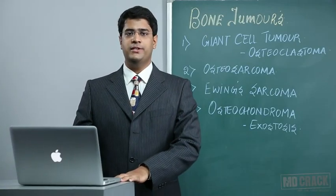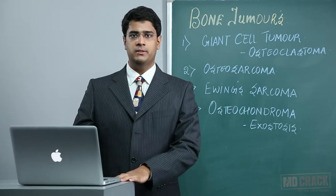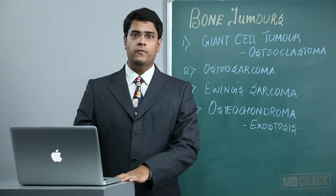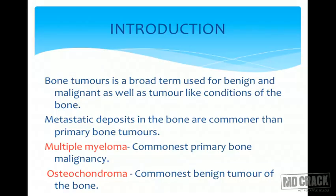Welcome students back to another interesting session on bone tumors. It's a very important session where many MCQs can come from this topic. Bone tumors is a broad term used for both benign and malignant as well as tumor-like conditions of the bone. Metastatic deposits in the bone are commoner than primary bone tumors. Multiple myeloma is the commonest primary bone malignancy — remember this, it can definitely come as an MCQ. Osteochondroma is the commonest benign tumor of the bone.